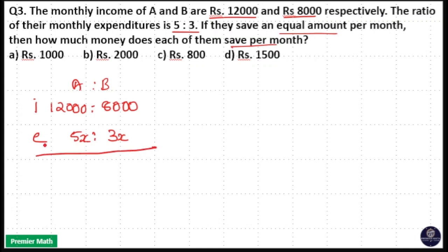That means their savings is income minus expenditure. But they save equal amount. That means 12,000 minus 5x is equal to 8,000 minus 3x.